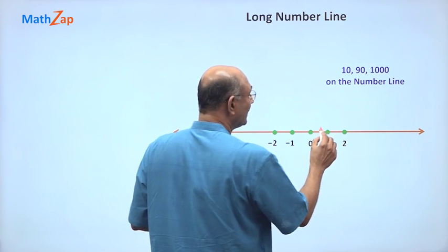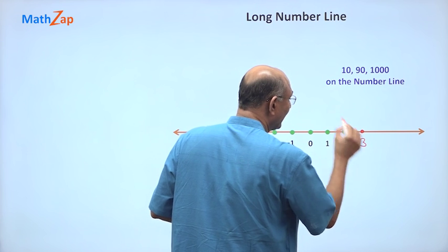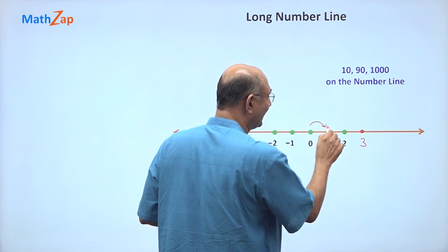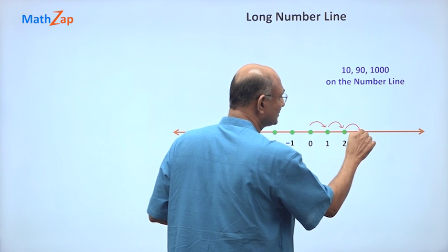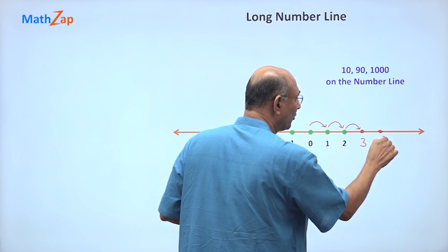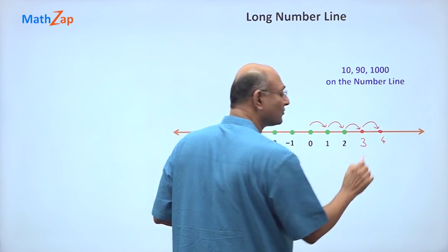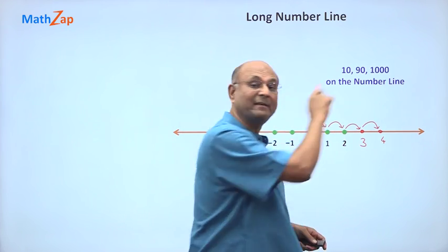If I wanted to mark 3, I can mark it there. You know that this is distance of 1, distance of 1, distance of 1. Similarly, if I want 4, I can mark with a distance of 1. I can mark 5, 6, 7.